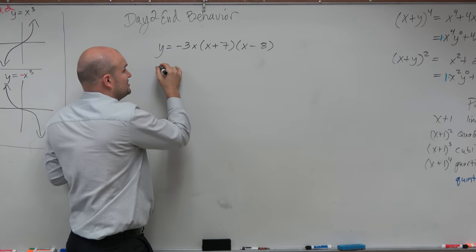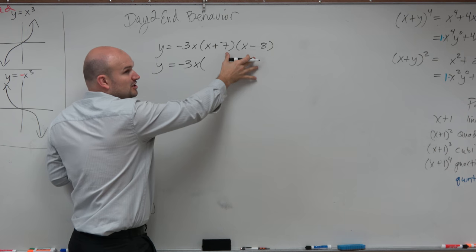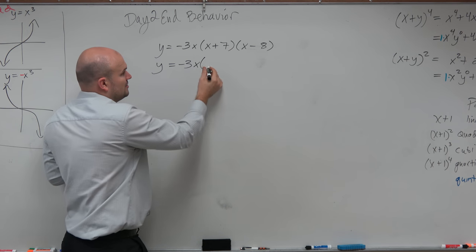Now I could multiply this out, but I could also save myself a lot of time and just realize that if I was going to multiply this out, what would be my first term of my product? X squared.